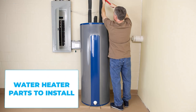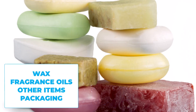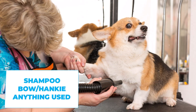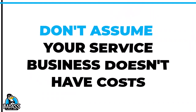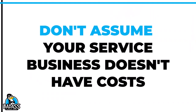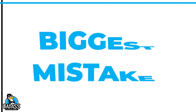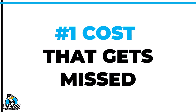For example, if you install water heaters, it's the water heater and the parts needed to install it. If you make soap, it's all the ingredients and the packaging. If you are a dog groomer, you still used shampoo, maybe a bow or a handkerchief for little Fido. So don't assume you don't have any costs just because most of what you do is provide a service. But here's where the biggest mistake in cost of goods is made: there is one more cost that is oftentimes not captured, and that is your labor costs — especially if you're a solopreneur.